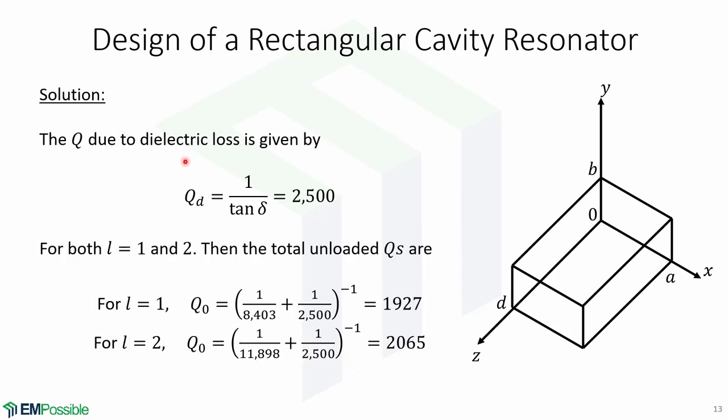Now the Q due to dielectric loss is just given by 1 over the loss tangent, it's equal to 2500, and it's the same for both l equals 1 and 2. Now we can calculate the total unloaded Q's for l equals 1, which is 1927, and l equals 2 equal to 2065.